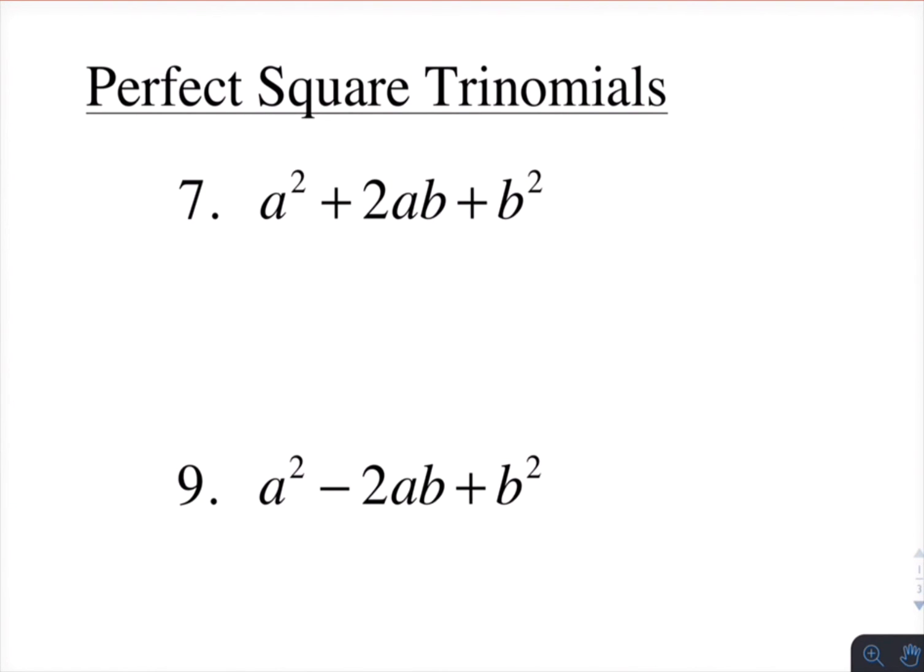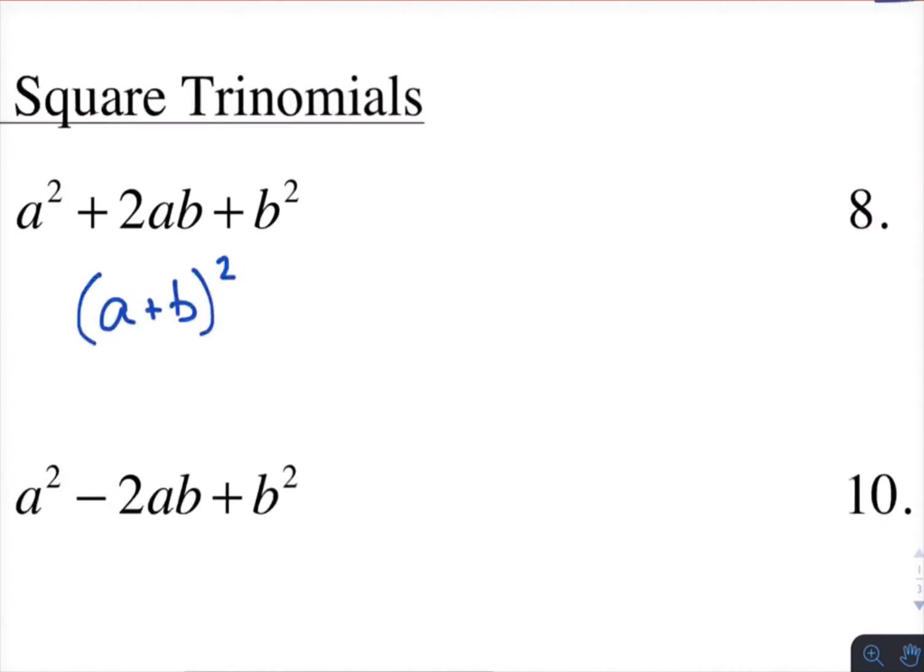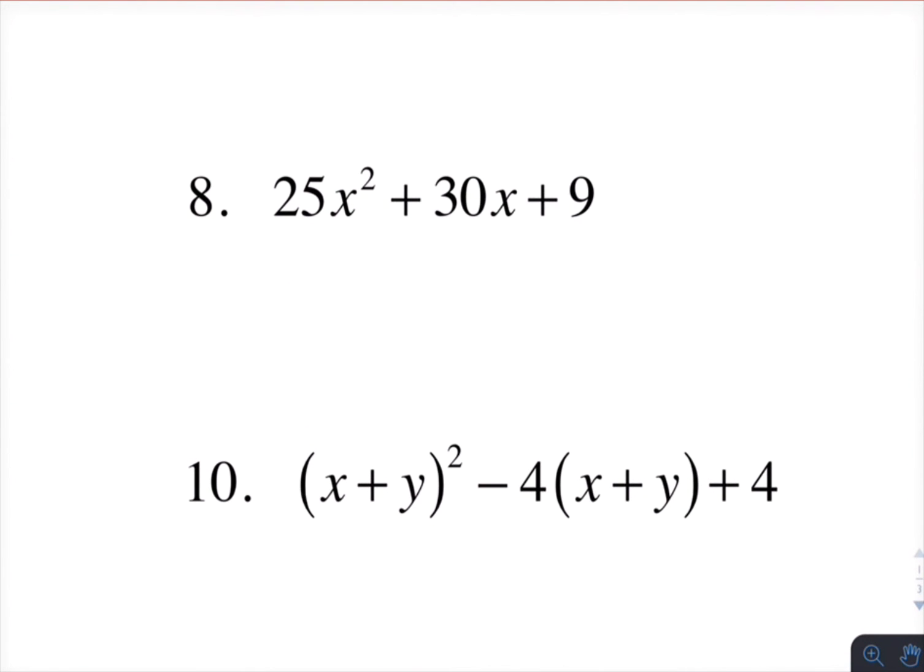Perfect square trinomials. They are called so because they are the result of squaring a binomial, and it results in a trinomial. So the binomial that was squared to get this trinomial was a plus b squared. So see if you can figure out how to identify a perfect square trinomial. This one right here is a perfect square trinomial. It turns out that it's 5x plus 3 squared.